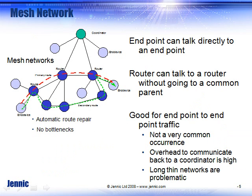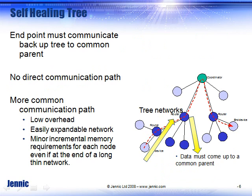What is a mesh network? A mesh network means that an endpoint can talk directly to another endpoint without having to go up to a common parent or a common router. That is what differentiates ZigBee Pro from some of the other software stacks. However, that's not very common — it's not common for one endpoint to talk directly to another endpoint, and doing so requires a lot more memory resources on each device, especially as the network gets larger. A self-healing tree gives you similar capabilities to what mesh does — tree paths can go away and it will find alternate paths. However, one endpoint talking to another must come up to a common parent and then data communication comes back down. That reduces overhead and allows for much larger networks.